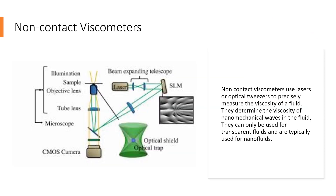Next, we're going to look at viscometers with a non-contact drive. These use lasers or optical tweezers to precisely measure the viscosity of a fluid, determining it through nanomechanical waves in the fluid. They can only be used for transparent fluids and are typically used for nanofluids. They're also really expensive, so they're not used all the time.